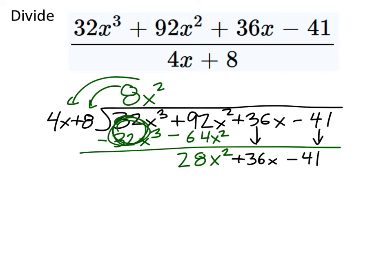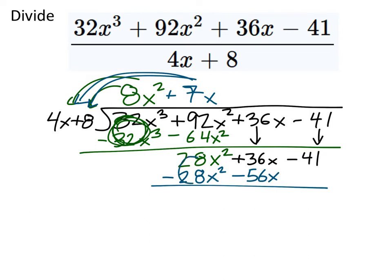I've got 92x squareds minus 64x squareds, which is 28x squared. But now I'm going to drop my 36x and my negative 41. So now this is my new expression, which I'm going to divide with the 4x plus 8. And how many 4x's go into 28x squared? We can start with just the numbers. How many 4's go into 28? 7 of them do. And that would be positive 7. And how many x's go into x squared? Just an x.